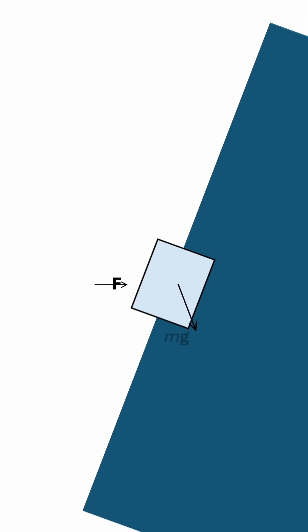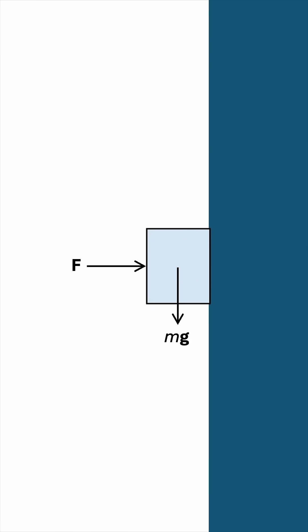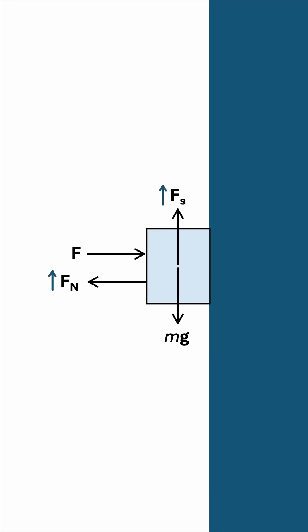So back to our original question, the force that is preventing the block from sliding down the wall is the static friction Fs. If you push harder, then the normal reaction provided by the wall will increase to prevent horizontal motion. And as Fn increases, Fs, which is proportional to it, will increase. Therefore, giving it a larger threshold to which it can increase, counteracting gravity and preventing vertical motion.